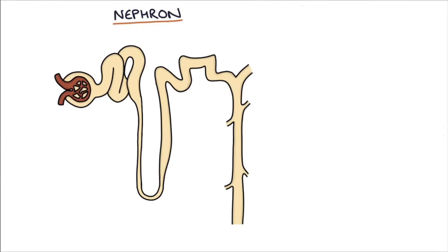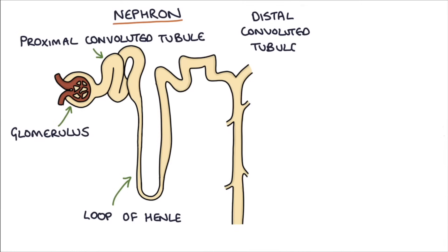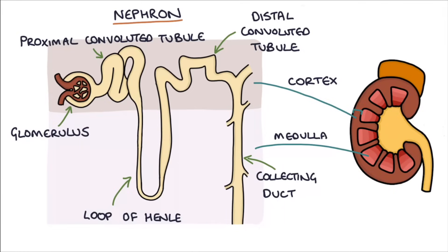The nephron consists of five main landmarks: the glomerulus, the proximal convoluted tubule, the loop of Henle, the distal convoluted tubule, and the collecting duct. The glomerulus and the convoluted tubules are up in the cortex of the kidney, and the loop of Henle and the collecting duct pass down into the medulla of the kidney.